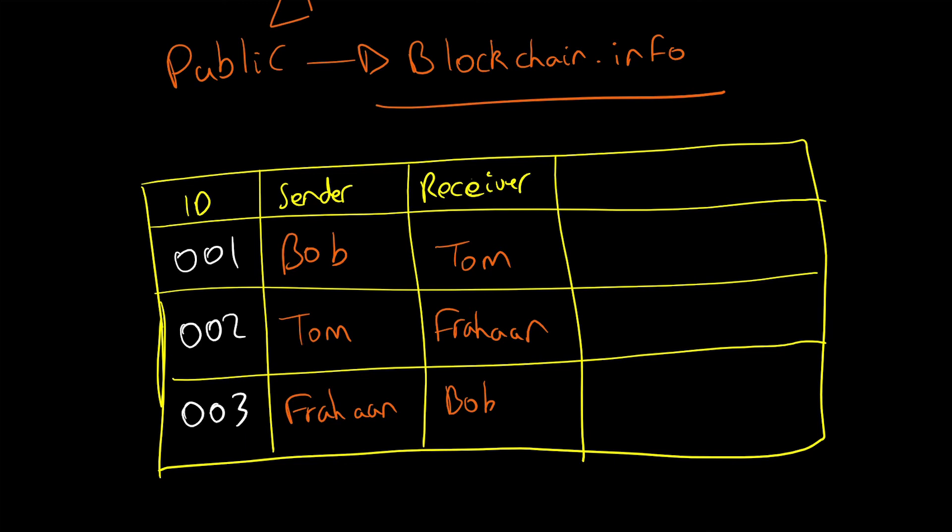And one thing I literally just forgot is the actual amount that we're transferring. That is actually quite a crucial part. So I'll just split this into two, so we'll have amount and we'll have timestamp. So the amount, it doesn't really matter what the amounts are. Bob sends half a Bitcoin.